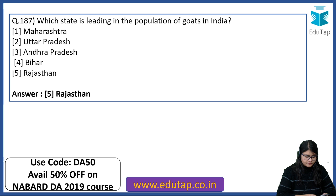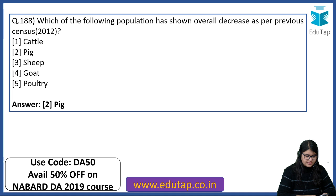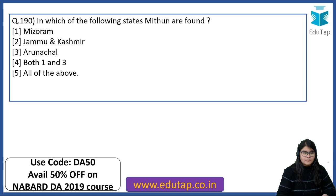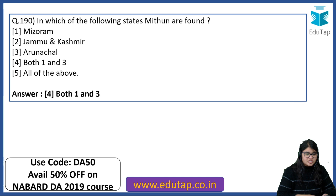These last few questions are very important — please revise them. Which population has shown overall decrease as per the previous 2012 census? The answer is pig. By how much percentage has the high milk-yielding exotic crossbred cattle population increased compared to the previous census? The answer is 32%. In which states is Mithun, an important bovine species, found? The right answer is both Mizoram and Arunachal Pradesh.